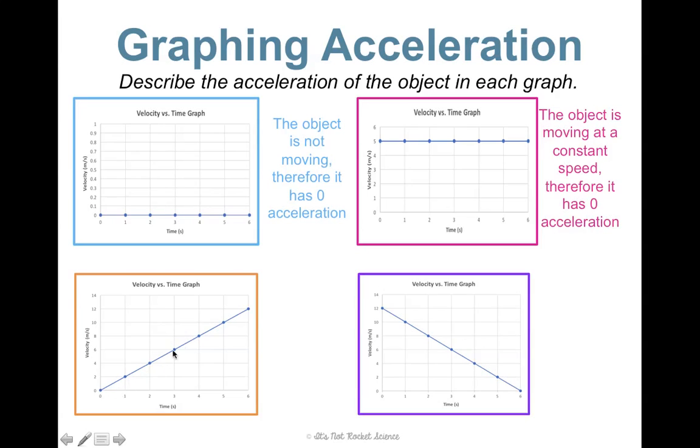This line has a positive slope. It's going up. You can see the velocity is increasing. Two meters per second, and then four, and then six, and then eight, and then ten, then twelve. So this would show an object that's speeding up and has a positive acceleration.